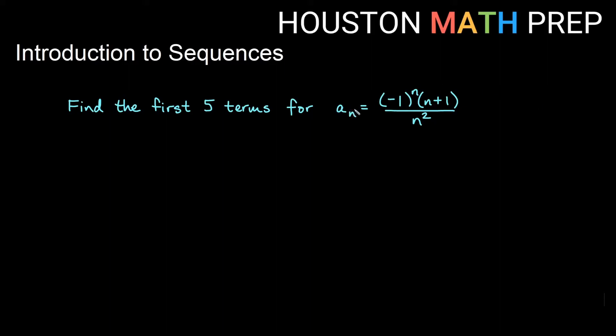We have our formula a sub n equals negative 1 to the n, then we have times the quantity n plus 1, all of that is over n squared. We are going to find the first five terms. So if I'm finding the first term, that would be a1. If I'm finding a1, I just plug in 1 in the explicit formula here everywhere there's an n.